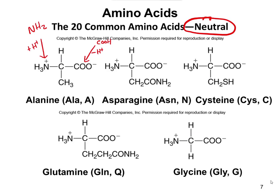The R group for alanine is CH3 — just a methyl group. Asparagine has a CH2-CONH2 side chain; that CONH2 is an amide. Glutamine similarly has a CONH2 amide — that's a C double bonded to O bonded to an NH2. You don't need to memorize these side chains as they're on your formula sheet, but you should be able to identify functional groups like the amide.